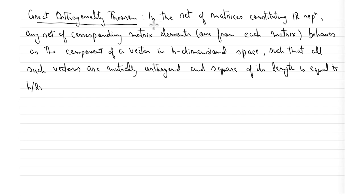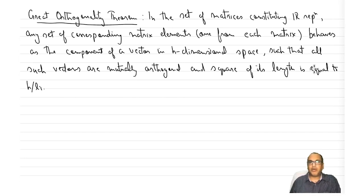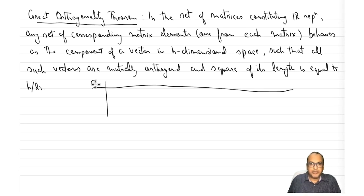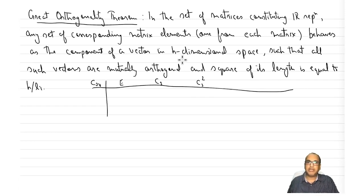Let us look at the definition. In the set of matrices constituting irreducible representations, any set of corresponding matrix elements behaves as the component of a vector in h-dimensional space, such that all such vectors are mutually orthogonal and the square of its length is equal to h by li. Let us take the example of the C3v point group, since we have seen the matrices there.